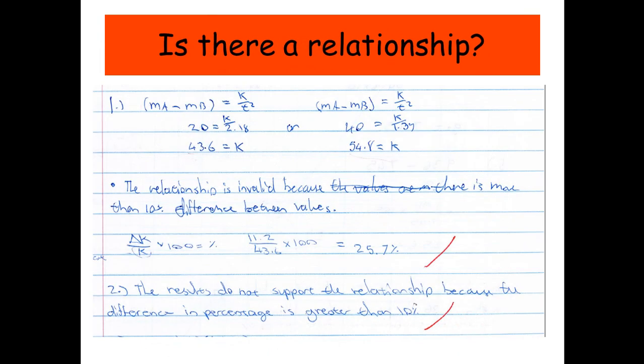And then there's often a question, is there a relationship between whatever you're being asked to investigate. And students often don't know how to answer this. What you need to work out is the percentage difference between the two values of k or whatever it is. And then you can say something, well let's have a look at what the student said. The relationship is invalid because there's more than 10% difference between the values.